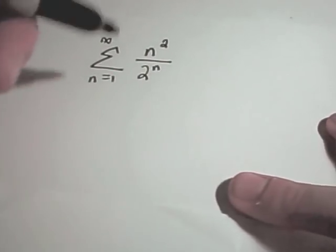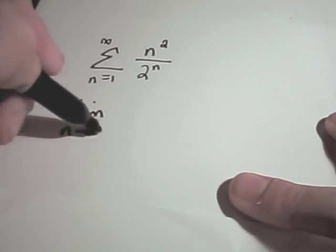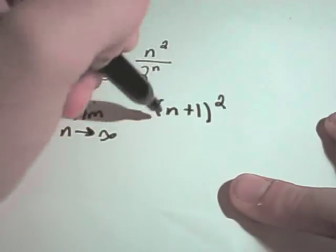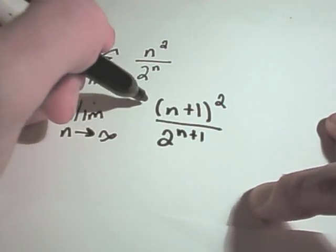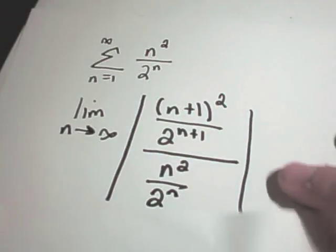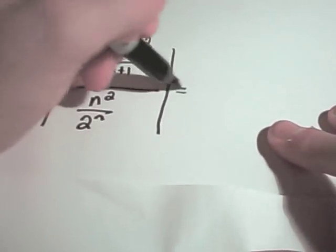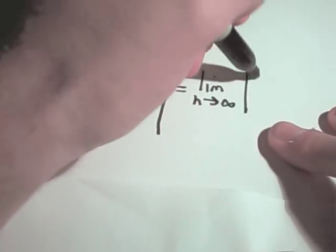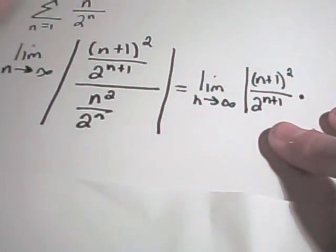So let's apply that to this series here. We need to take the limit as n goes to infinity, and everywhere there's an n I'm going to replace it with n plus 1. So I'll have n plus 1 squared all over 2 to the n plus 1. Dividing by the original is equivalent to multiplying by the reciprocal, so I'll have my n plus 1 squared over 2 to the n plus 1, and then I'll multiply that by 2 to the n over n squared.